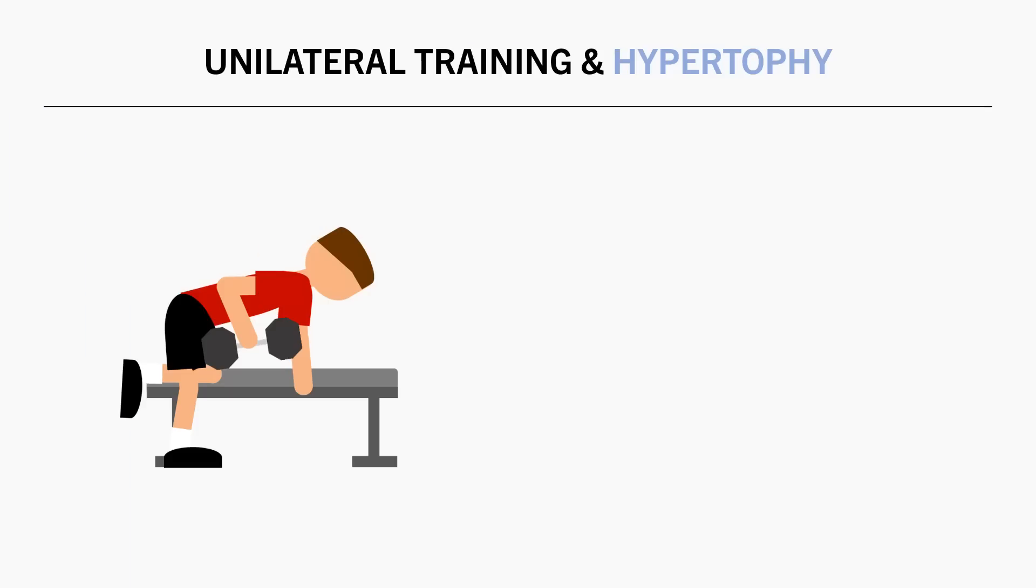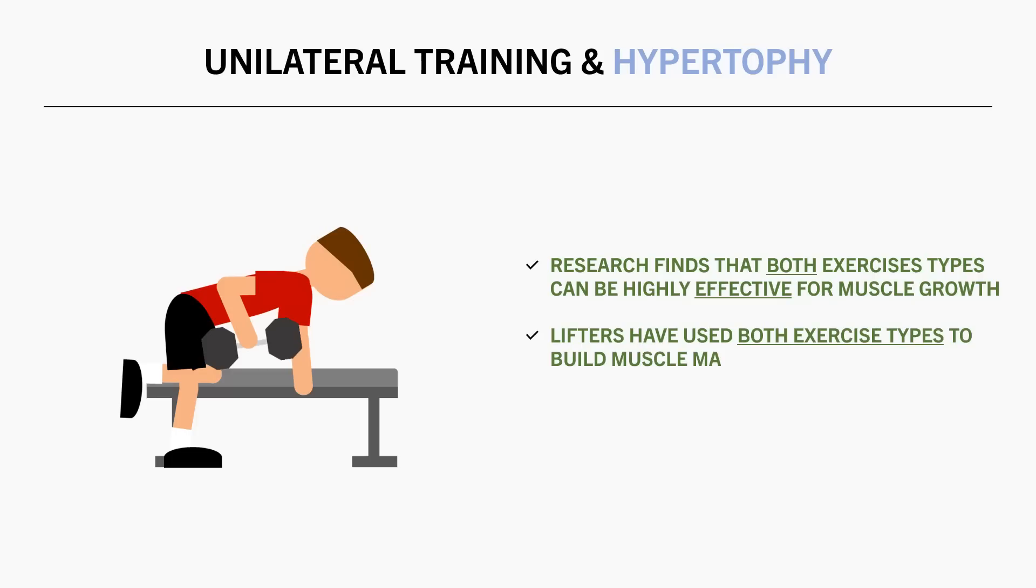Although are either of these exercise types inherently better for muscle growth than the other? Well there are many studies which find great hypertrophy from unilateral training and also from bilateral training. In practice many successful trainees have reported using both exercise types in their routines, and this makes sense based on what we previously discussed regarding muscle stress. However to my knowledge there aren't any studies which directly compare muscle growth between bilateral and unilateral training, so we can't really make direct implications until we have solid evidence to support these claims. However we can use indirect evidence to make informed assumptions about the potential benefits of each exercise type.